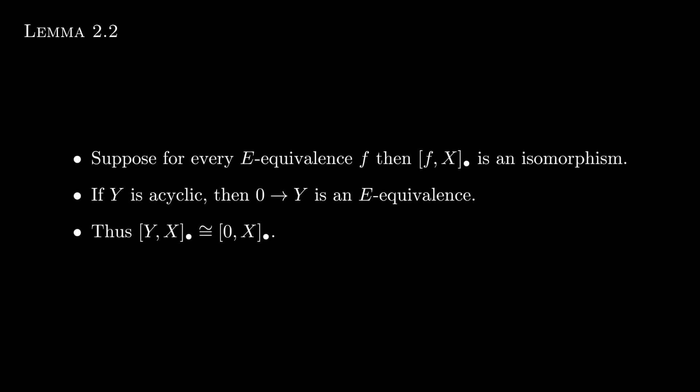So let's prove that the two statements in part 3 are indeed equivalent. One direction is relatively straightforward. Assume that the first statement, that for every E-equivalent f, that f_X bullet is an isomorphism. Now let Y be E-acyclic. This means by definition, basically, that the unique map from 0 to Y is an E-equivalence. Well, then by assumption, Y_X bullet is isomorphic to 0_X bullet, which is 0 in each dimension. Well, then Y_X bullet is 0.